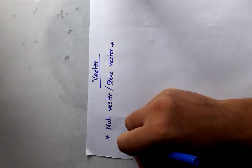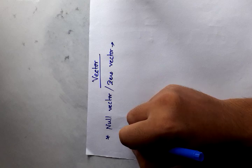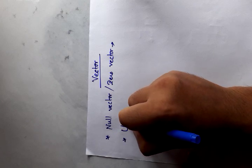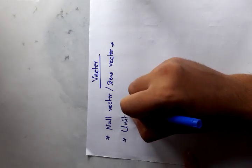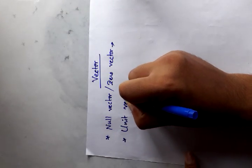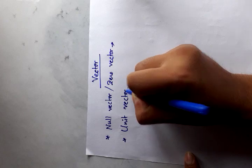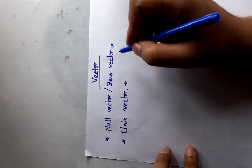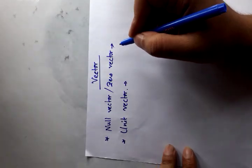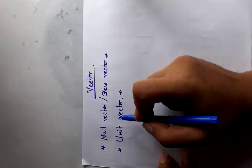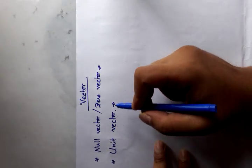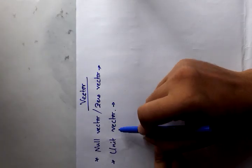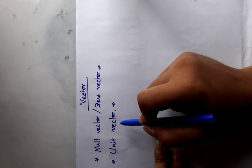Next we discuss unit vector. A vector quantity which has only direction but magnitude is 1 is called a unit vector.